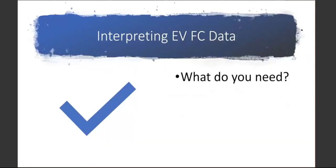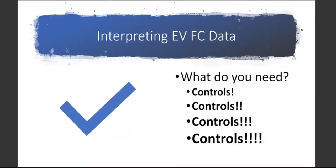So, what do we need? Lots of controls. In any environment, we really cannot interpret data without the proper controls. As a previous director of a core facility, the number one thing people came to me with was data asking for help with interpretation. Often the biggest problem was they did not have the proper controls — and that is why they couldn't interpret their data either. We're going to focus on the importance of controls, not only in EV flow cytometry but even more so critically with EVs.